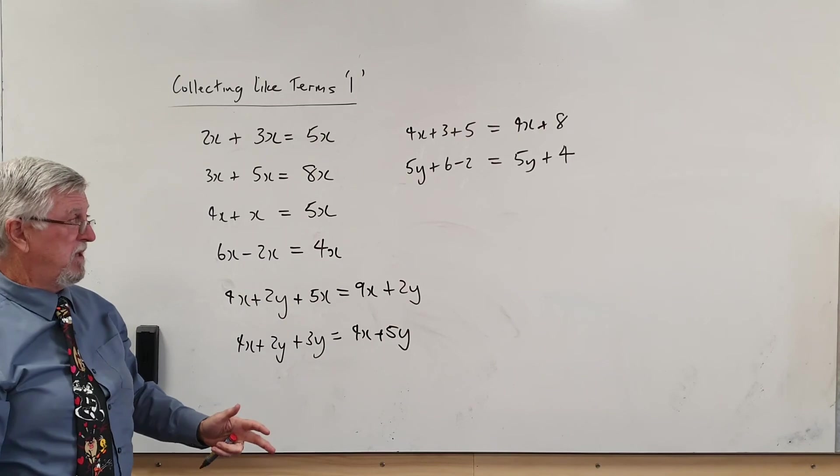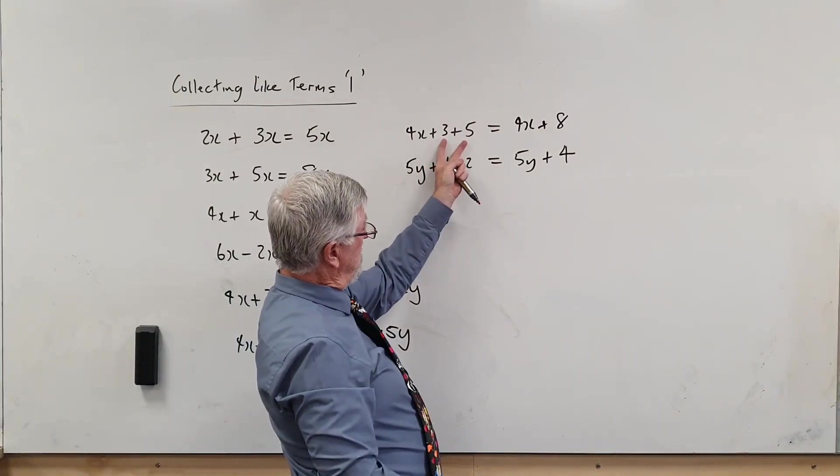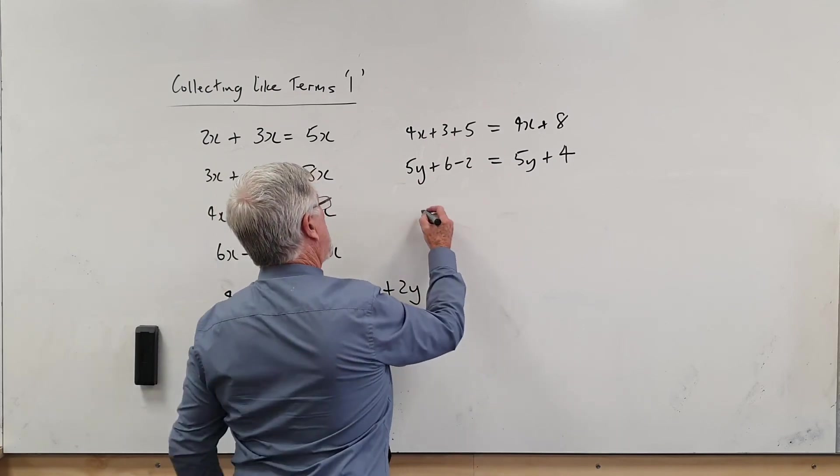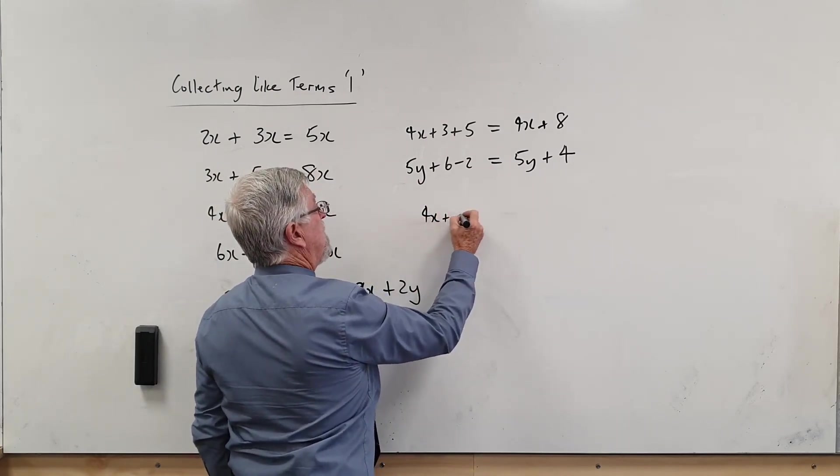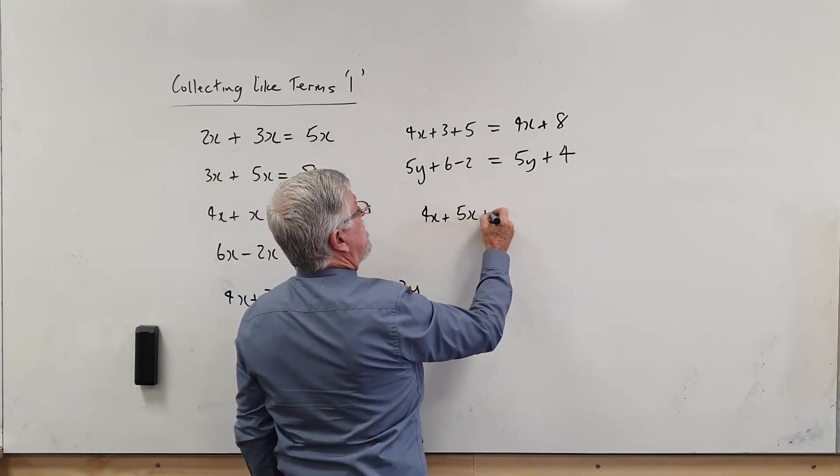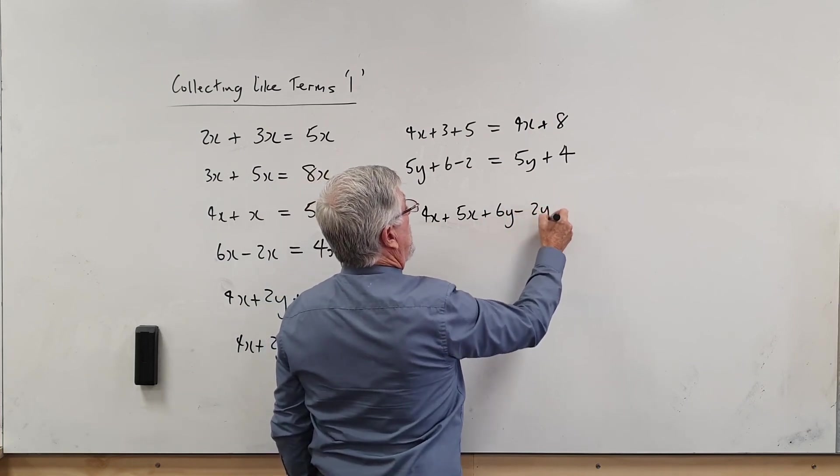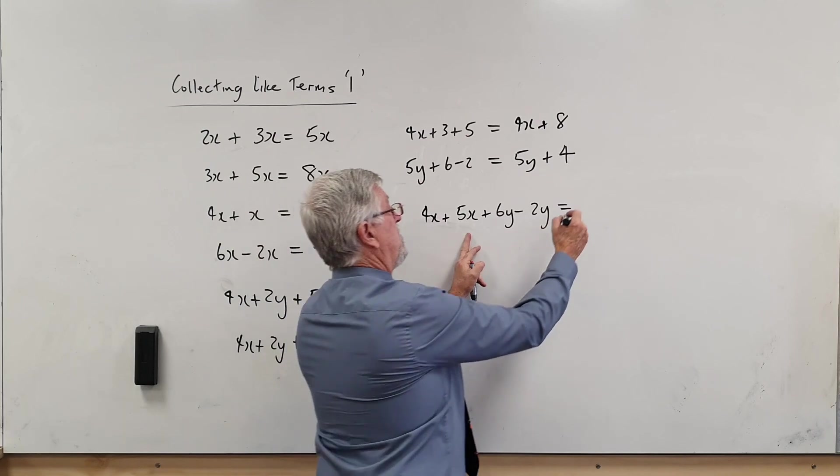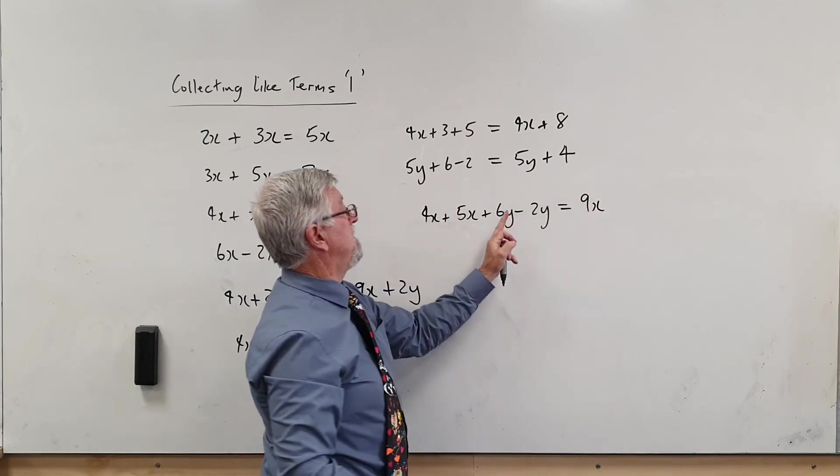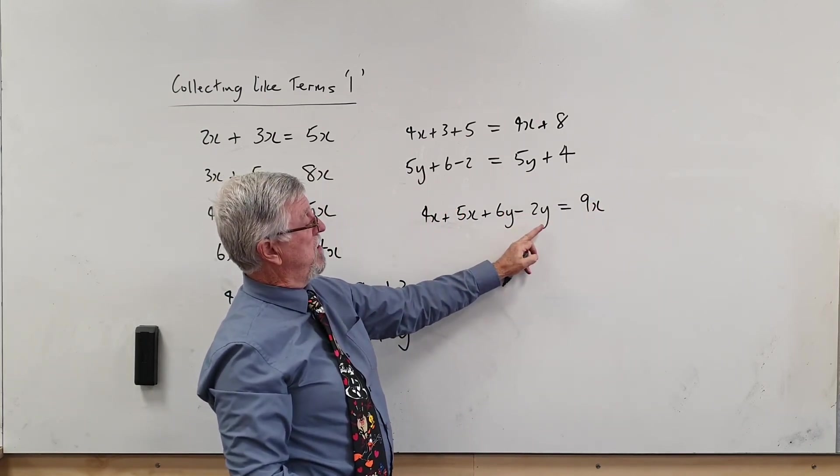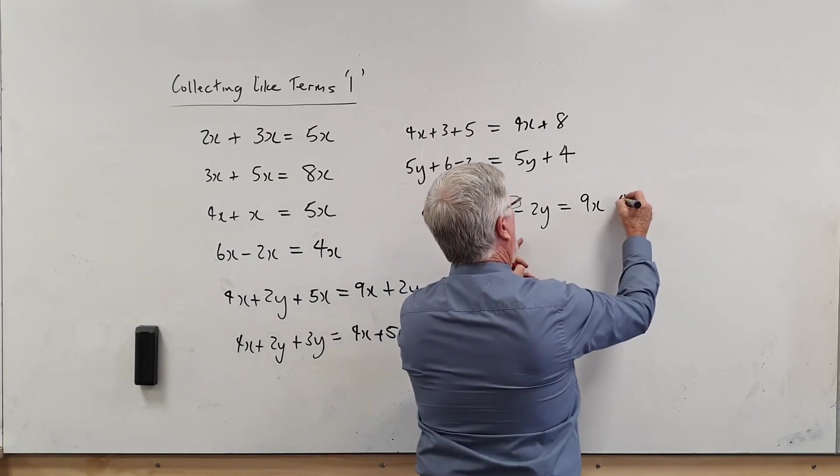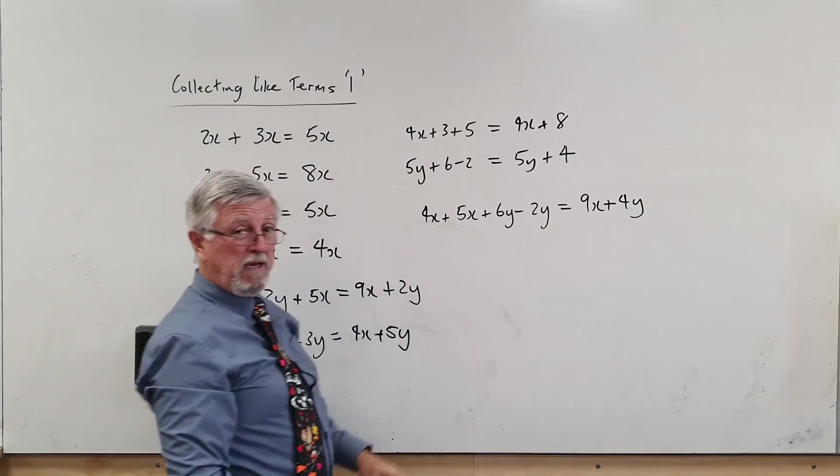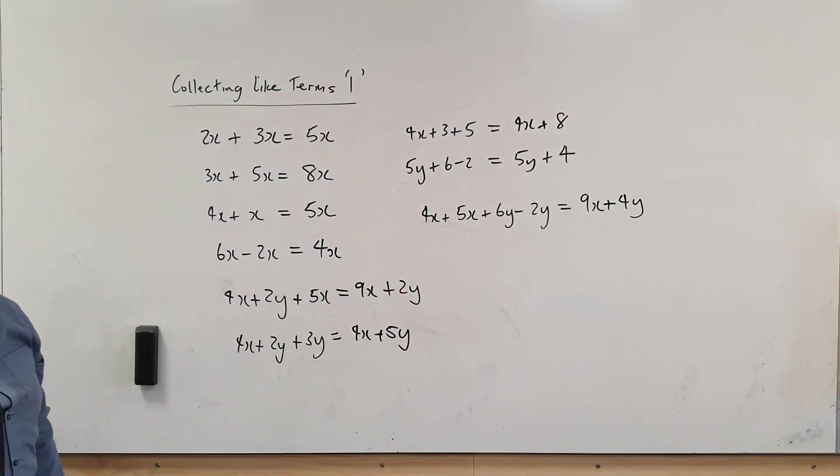So I can get a question that goes 4X plus 5X plus 6Y take 2Y. Let's have a look at what that is. So the 4X and the 5X becomes 9X, and the 6Y take the 2Y—that is 4Y. And you remember though, it's not a minus 4Y, it's a plus 4Y. So that's the basic idea of collecting like terms. I'll make another video.